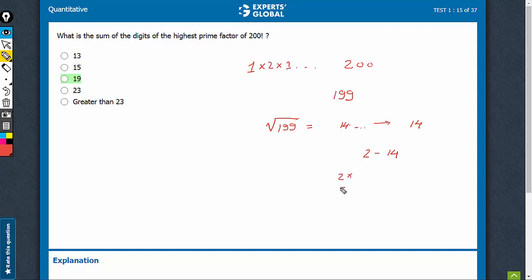2, of course, doesn't divide. 3 doesn't divide. For divisibility with 3, you just have to add the numbers and divide by 3. 5, of course, doesn't divide. 5 divides only when the last digit is 5 or 0.